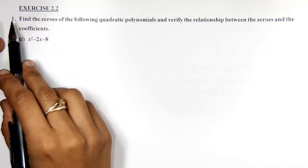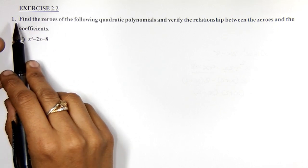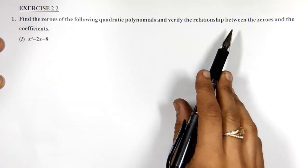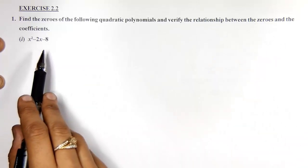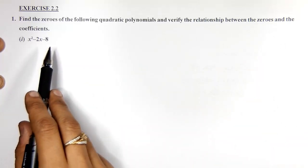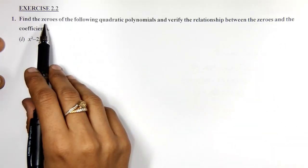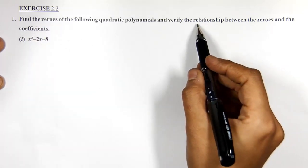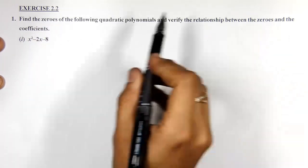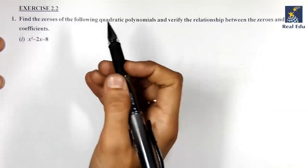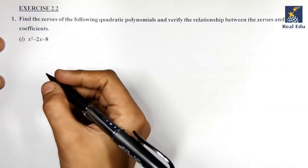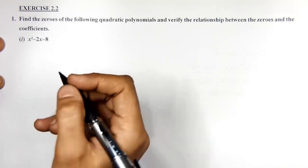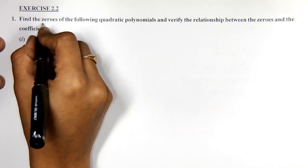Exercise 2.2, we are starting with question number 1: find the zeros of the following quadratic polynomial and verify the relationship between the zeros and the coefficients of the polynomial. Previously we have learned how to find out the zeros of the polynomial, and we have also learned that for quadratic equations we have the sum of the zeros and product of zeros.